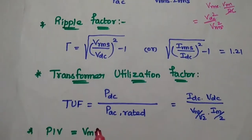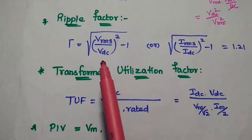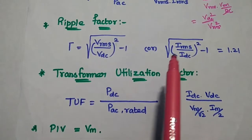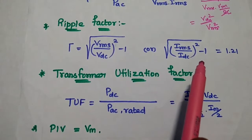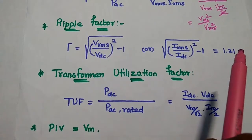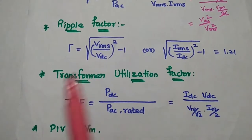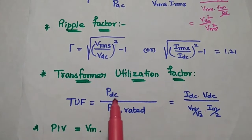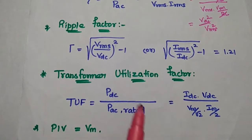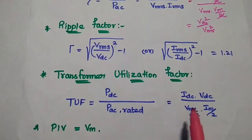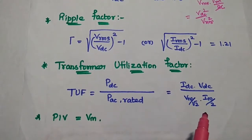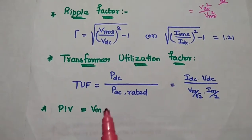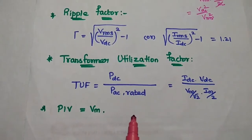The ripple factor equals √((Vrms/Vdc)² − 1), or equivalently √((Irms/Idc)² − 1). Its value is always 1.21 for a half wave rectifier. The transformer utilization factor (TUF) is the ratio of DC output power to rated AC power, equal to (Idc × Vdc) / ((Vm/√2) × (Im/2)). The peak inverse voltage is simply the maximum voltage of the input signal.